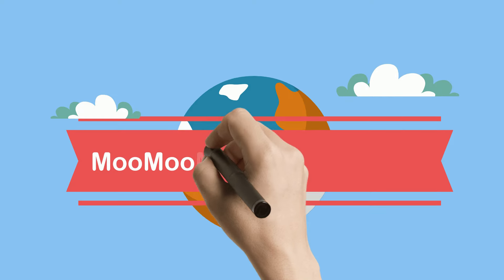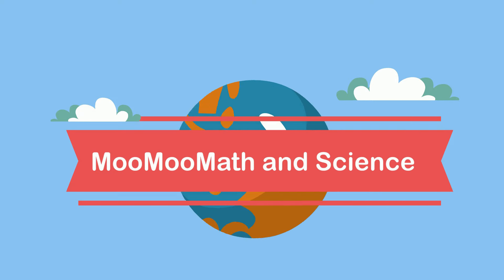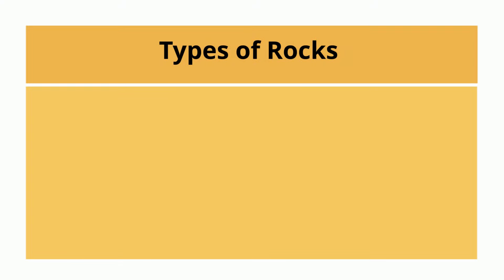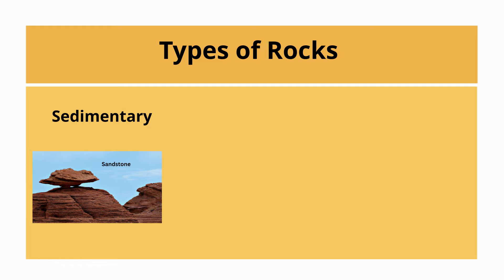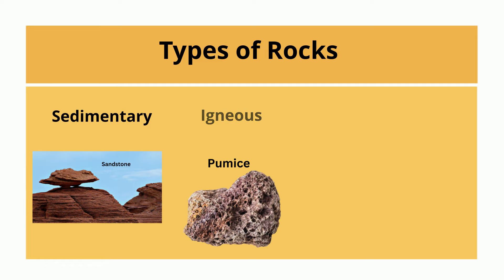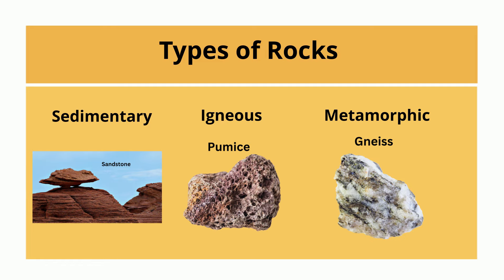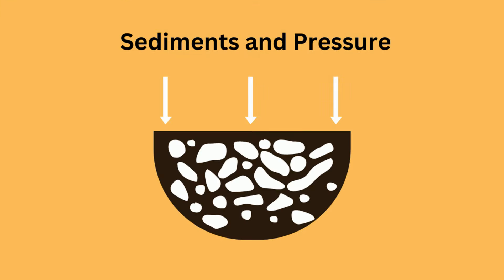Welcome to Moo Moo Math and Science and the three main types of rocks: sedimentary, igneous, and metamorphic rocks. Sedimentary rocks are rocks created from sediments and pressure.